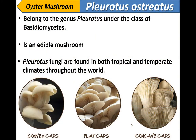Oyster mushroom, specifically Pleurotus ostreatus, belongs to the genus Pleurotus under the class Basidiomycetes. They are edible mushrooms. Pleurotus fungi are found in both tropical and temperate climates throughout the world. As you can see in the pictures, these are the fruiting stages of oyster mushroom.